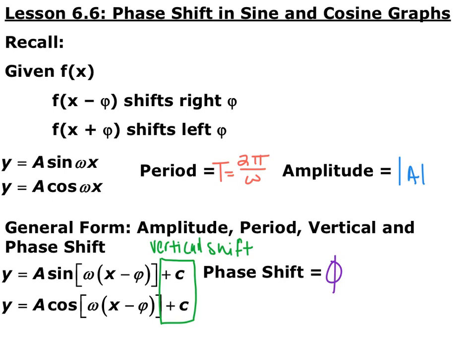So we've talked about transformations before — left and right horizontal shifts. If we have something subtracted from x, it's going to shift you right that amount. If you have something added to x, it's going to shift you left that amount. This is the Greek letter phi. In trig we usually use Greek letters. We've also talked about the parent functions of sine and cosine graphs and what happens when you have vertical and horizontal stretches and compressions.